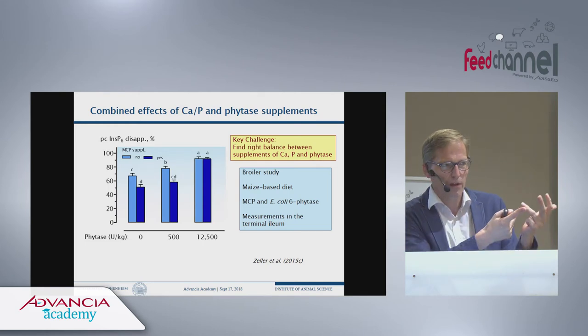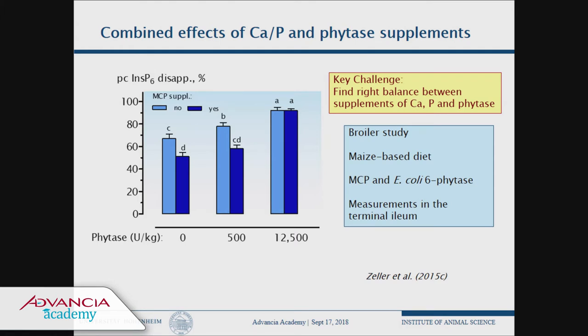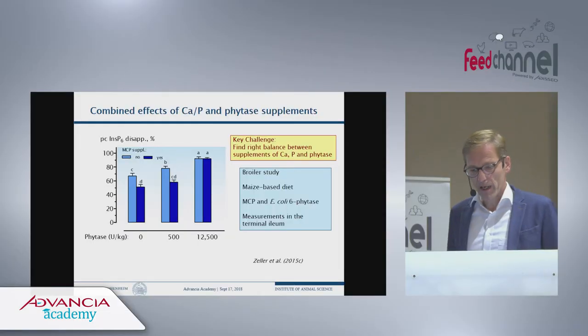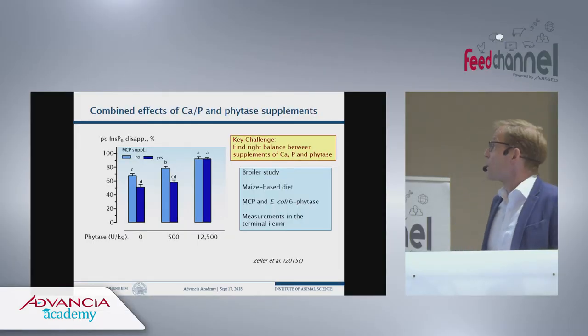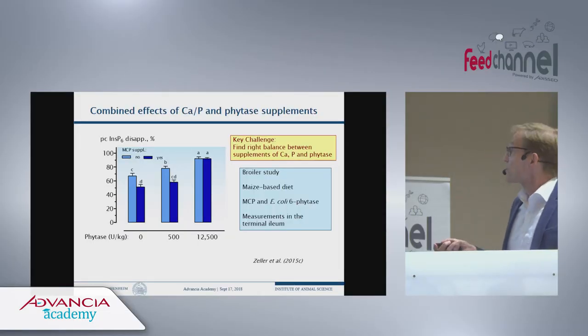The worst thing you can do is try to reduce phosphorus slightly to reduce cost and benefit the environment, while at the same time not reducing calcium. Using excess calcium supplementation in your diets is the worst thing you can do — and people often tell me that is still the case in the field, which is not good.